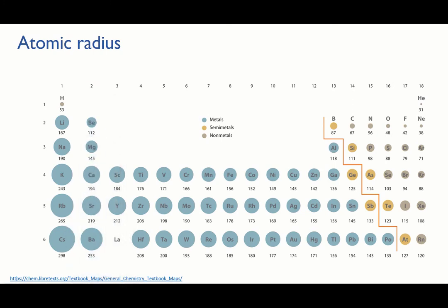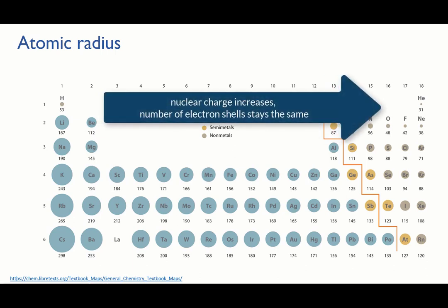Going across a period, the number of electron shells in the atoms stays the same, because they're all in the same period, they all have the same valence shell. So no change there. But simultaneously, the number of protons in the nucleus is increasing. So the electrons are pulled more tightly in, and the atoms get smaller.